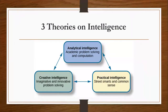Moving on to intelligence. There are three theories of intelligence we will talk about. The first is crystallized-fluid intelligence — a type of intelligence split into two parts. The crystallized portion refers to the acquisition of knowledge and the ability to retrieve it. The fluid portion refers to the ability to see complex relationships and solve problems.